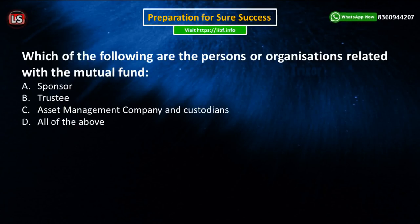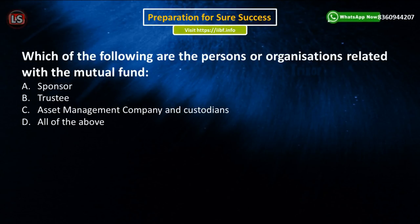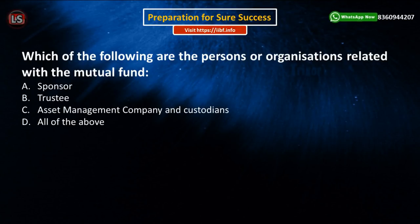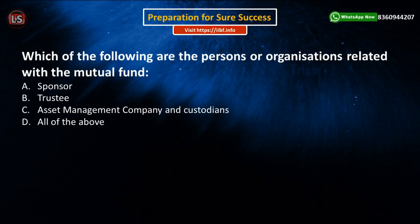The next question asks: Which of the following persons or organizations are related to a mutual fund? As explained, the sponsor sets up the trust; the trustee holds the mutual fund property for the benefit of unit holders; the asset management company manages and invests assets; and the custodians keep the securities in custody. All of them are part of the mutual fund, so the answer is Option D.